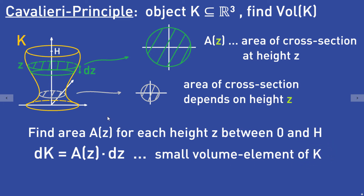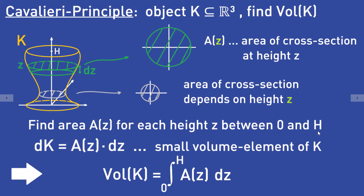Here in the picture you can see what is happening. The last thing we have to do is to continuously summarize over all these small volume elements A(z) times dz from z equal to 0 to the height capital H of the object K. Continuously summarizing means that you have to integrate. So the volume of the object K is given by the integral from z equal to 0 to capital H of A(z) times dz.